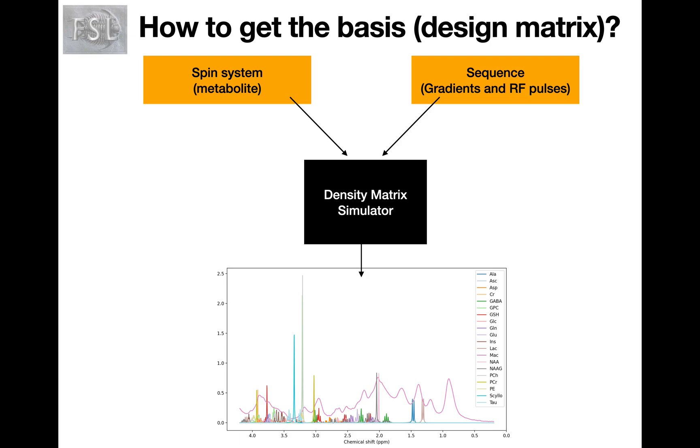Now, how do we get this design matrix of basis spectra? This is typically done using simulations which can be done in FSL MRS. This simulation, called density matrix simulation framework, takes as an input a description of the spin system or basically the chemical structure of metabolites, a lot of which are stored inside the FSL MRS, and a precise description of the sequence in terms of gradients and RF pulses. This produces a series of spectra as you can see here in the bottom for the chosen metabolites.